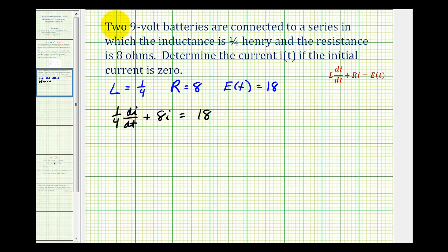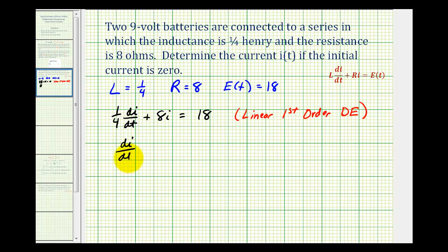This is a linear first order differential equation. We're going to solve this using an integrating factor. Let's put this in standard form by multiplying everything by four, giving us di/dt plus thirty-two i must equal seventy-two.